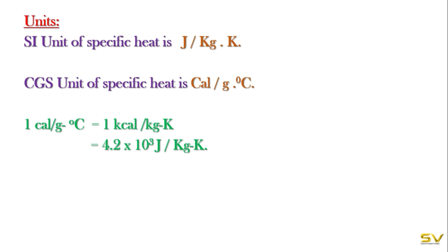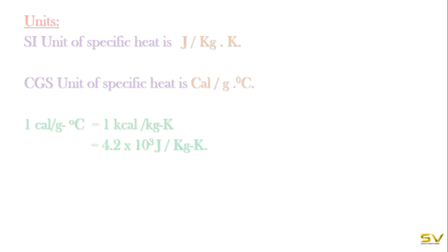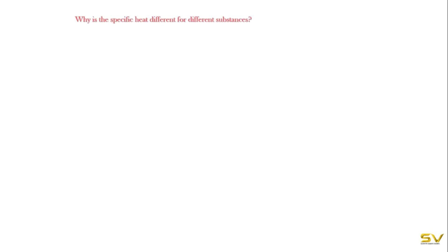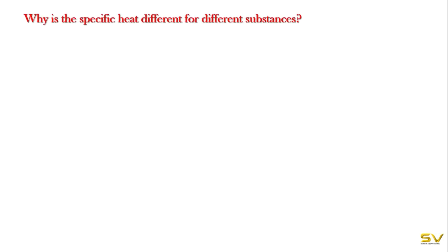One calorie per gram degree Celsius is equal to one kilocalorie per kilogram kelvin, which equals 4.2 × 10³ joule per kilogram kelvin. But why is specific heat different for different substances?